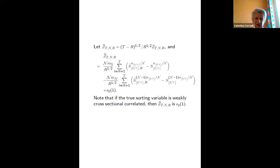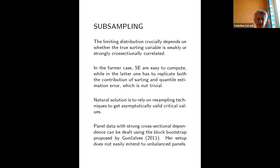There are tests for sparsity, but we want a procedure robust to knowledge of cross-sectional correlation because, as Enrique noted, we don't see investors testing sparsity before sorting portfolios. In the case where r doesn't grow faster than T and we have strong cross-sectional correlation, we must account for two estimation errors: quantile estimation error and sorting estimation error. We generally do not have closed-form expressions since they depend on the density of the quantile and many other pieces, so we rely on resampling procedures.